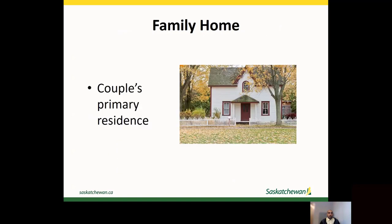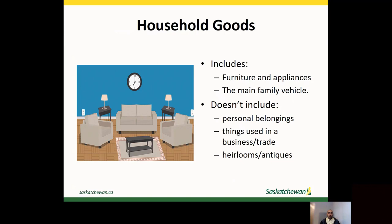The family home is a property that the spouses lived in during their relationship. There may be more than one home owned. Some people will have a second home, such as a cottage. Usually the property where the people spend most of their time will be considered as the family home. Household goods includes anything in the family home or on that property, such as furniture, patio furniture, the main family vehicle, appliances, etc.